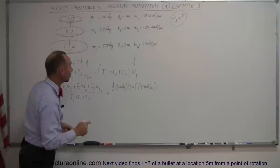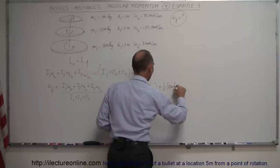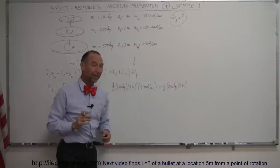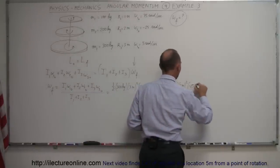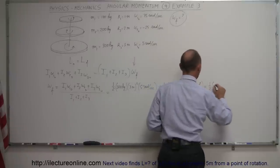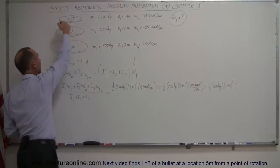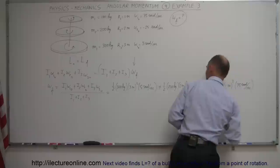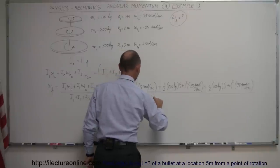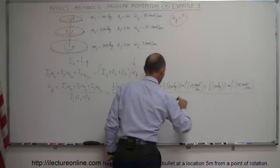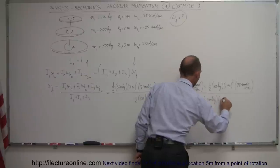Remember that counterclockwise angular velocity is positive and clockwise is negative. We add one-half times 200 kilograms times 2 meters squared for the second disk, times minus 25 radians per second (clockwise). Then plus the third disk: one-half times 100 kilograms times 1 meter squared, times positive 75 radians per second (counterclockwise). We divide the whole thing by the denominator: one-half×300×3², plus one-half×200×2², plus one-half×100×1².